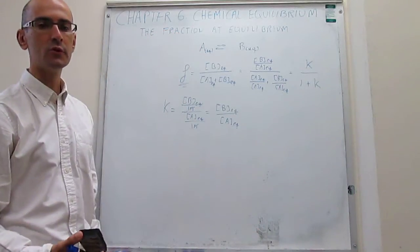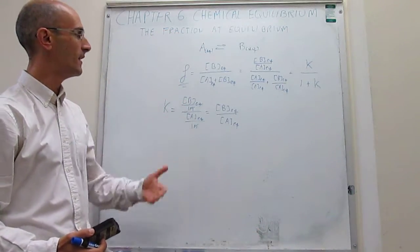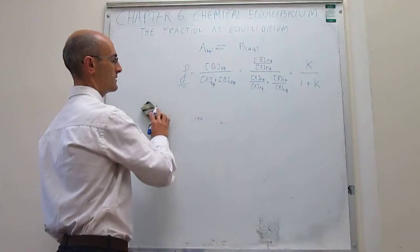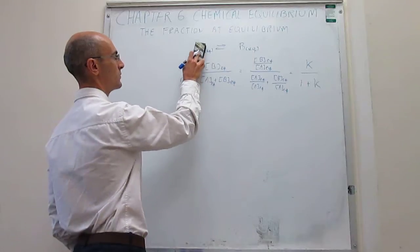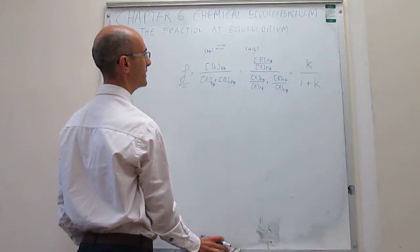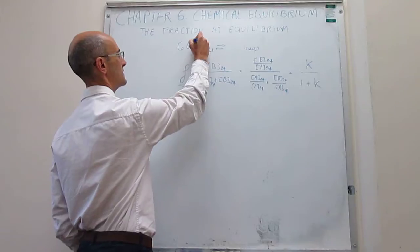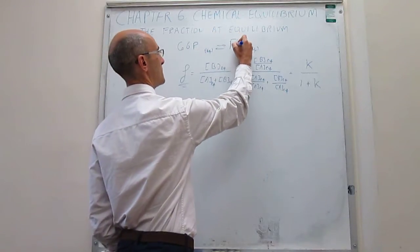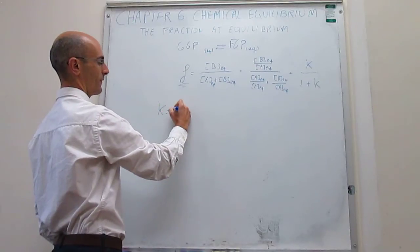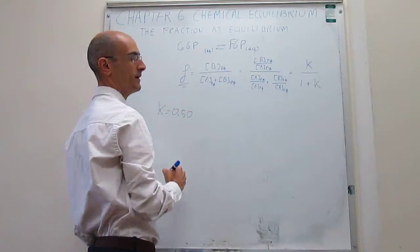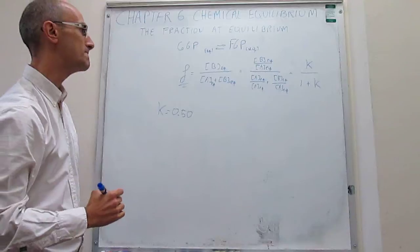We can use a numerical example to exemplify why this is useful. If we now go back to our favorite equilibrium so far, in which we don't have A and B but we have glucose-6-phosphate and fructose-6-phosphate, we have just calculated that the equilibrium constant for that process at 298 Kelvin is equal to 0.50.